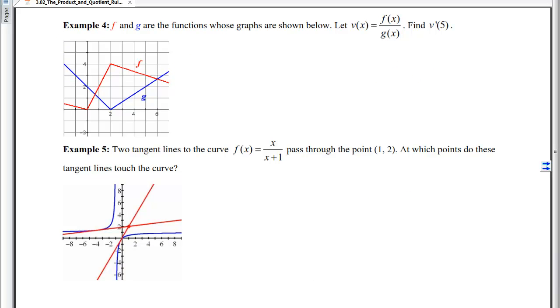With example 4, we're given a function graphically and then we are wanting to find a new function that is that f divided by the g and take the derivative of it and evaluate it at 5. So we're first going to take the derivative of v using that quotient rule. We'll get a low D high minus high D low over low squared. And then we need to evaluate that at 5.